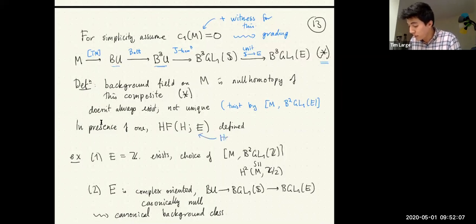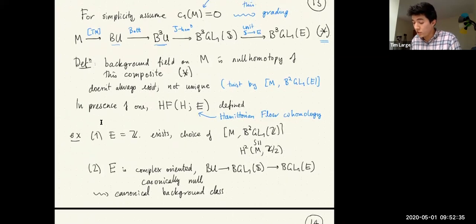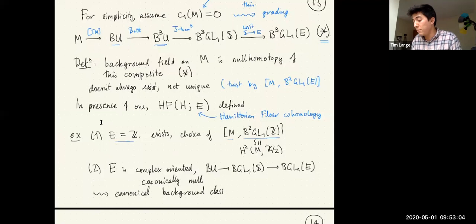In the presence of a background field you can define Hamiltonian Floer cohomology. We would like Hamiltonian Floer cohomology to carry a lot of algebraic structure — even if you could define the E-module, you'd want it to be a ring, and for this ring structure you really need the full background field. For E = Z, a background field always exists, but there's a choice since you can twist by a gerb. The choice is given by maps from M to B^2GL_1(Z) = B^2(Z/2), which are second cohomology classes of M with Z/2 coefficients — these are the background classes used to twist the symplectic cohomology of the non-spin cotangent bundle.